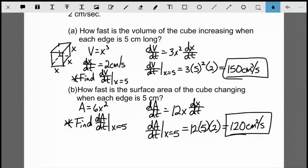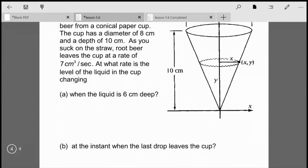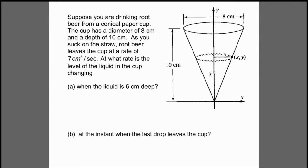That's the main process. Now I want to show a more typical related rates question — a little more involved. The problem says: suppose you're drinking root beer from a conical paper cup. The cup has a diameter of 8 centimeters and a depth of 10 centimeters. As you suck on the straw, root beer leaves the cup at a rate of 7 centimeters cubed per second. At what rate is the level of the liquid changing?